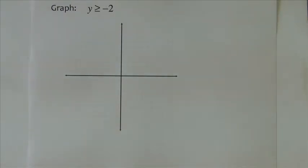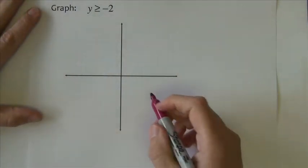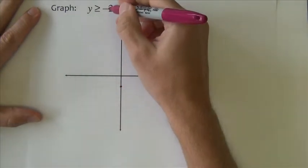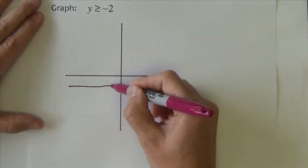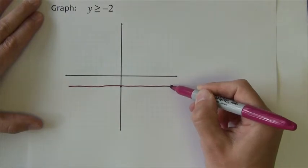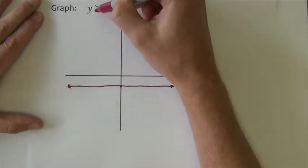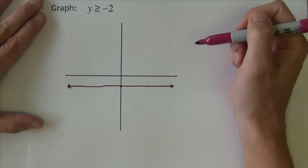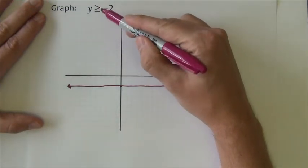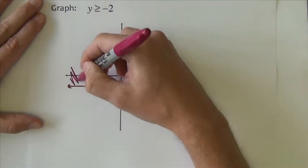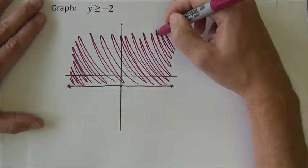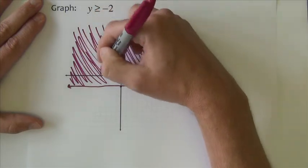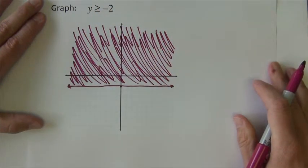Next example, y is greater than or equal to negative 2. Remember that a y equals line is a horizontal line that crosses through the y-axis at this number. So this line is going to cross through negative 2. I went ahead and made it a solid line because there is an equal to on this inequality. Then we want greater than. Greater than implies everything above the line, so we're going to shade everything up above the line.